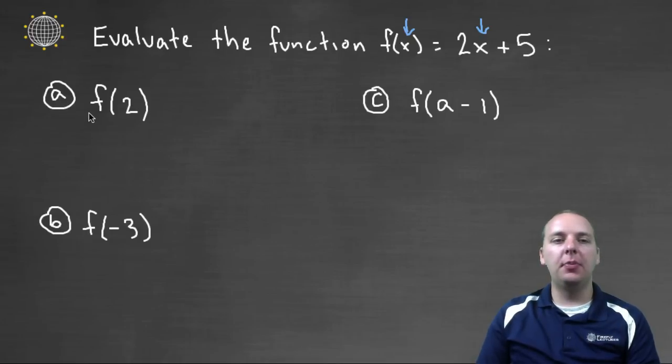For example, if they wanted f of two, then that means they want you to evaluate your function when x is two, because what you're doing is you're replacing x by the number two. So let's replace x with the number two on the right hand side as well to find f of two. We'll have two times two plus five instead of two times x plus five. Two times two is four, four plus five makes nine, so f of two would be nine.